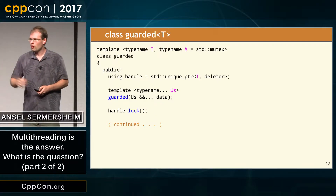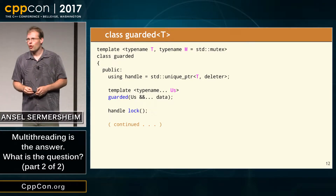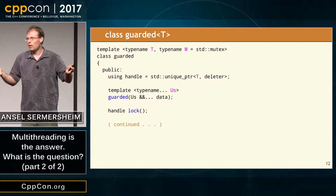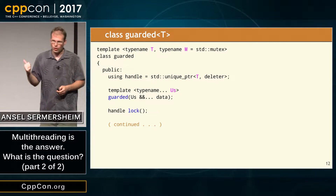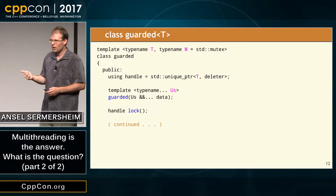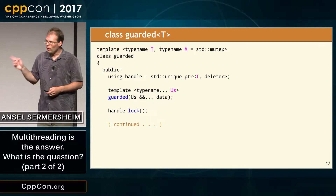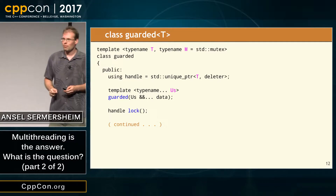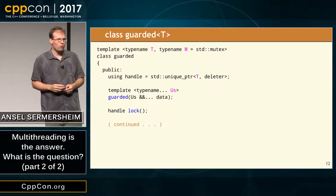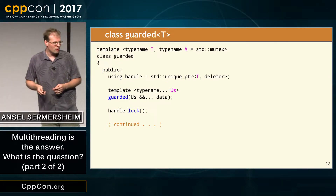This kind of looks like a mutex — it has a function called lock. But the difference is: in a mutex, lock doesn't return anything. Lock just says you locked it. Well, what did I lock? In this case, lock actually gives you a handle to the data that's being guarded by this object. So the only way to access the shared data is to lock it, and when you relinquish control because your handle goes out of scope, it's unlocked.